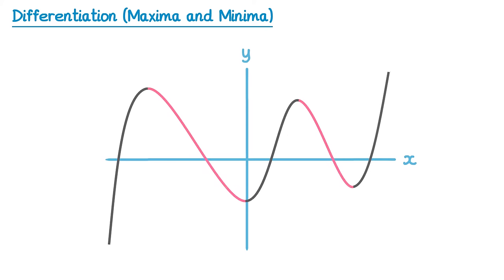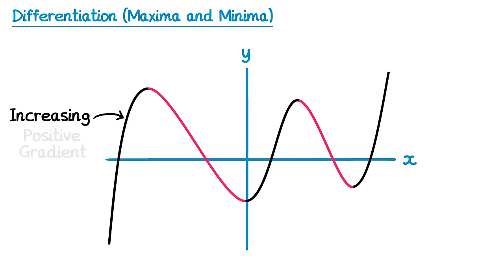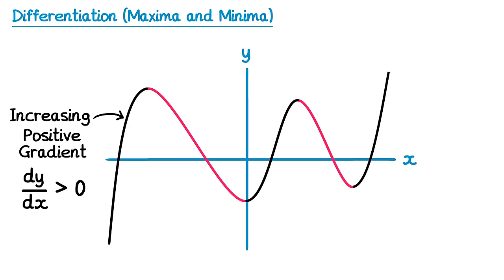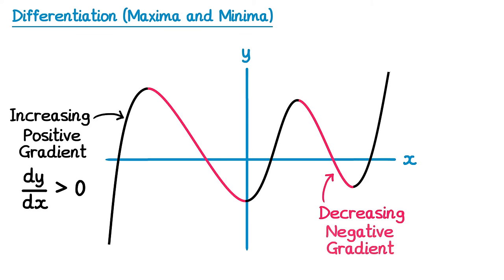In the previous video we looked at this function here. We saw how the black sections were increasing, therefore they had a positive gradient and dy by dx was greater than 0. Also the red sections were decreasing — they had a negative gradient and dy by dx was less than 0.